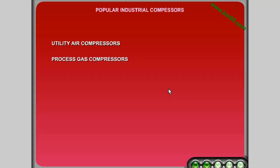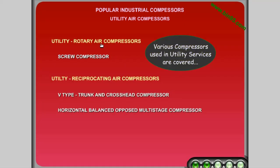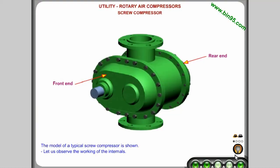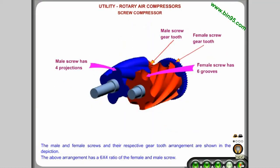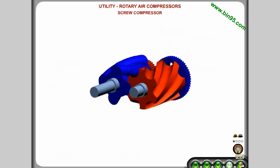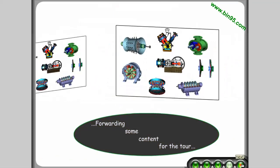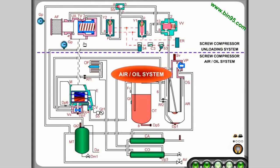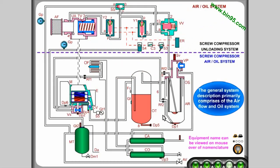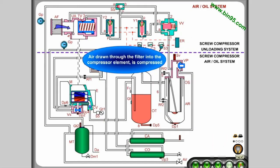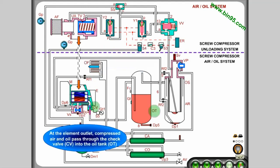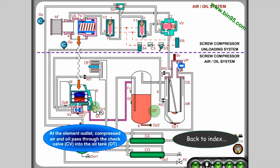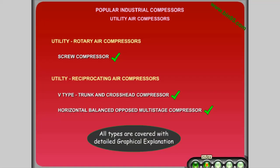The third chapter covers various compressors used in utility services. Forwarding some content for the tour. Further details are available, then back to index. All types are covered with detailed graphical explanation.